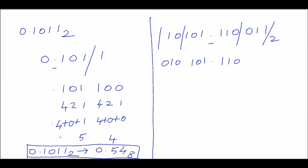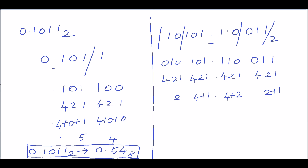So the groups are: 010 · 101 . 110 · 011. The binary weights are 1, 2, 4 for each group. Multiplying: for 010 — (0×1)+(1×2)+(0×4) = 2. For 101 — (1×1)+(0×2)+(1×4) = 5. For 110 — (1×1) ... actually (0×1)+(1×2)+(1×4) = 6. For 011 — (1×1)+(1×2)+(0×4) = 3.